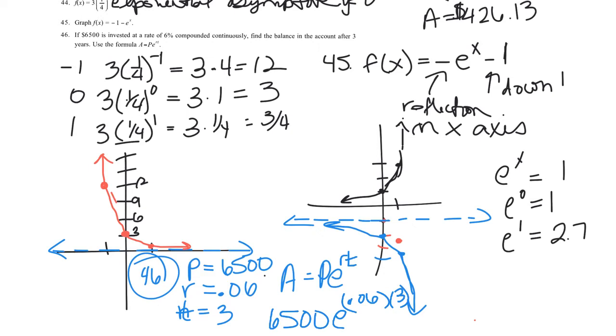So this is 6,500 times E to the 0.06 times 3. And in the calculator I'm going to do second LN. The E button is above the LN key. It'll say E to the X. So 0.06 times 3, and that's 6,500 times about 1.197. Again, I'm not going to round in my calculator. Times it by 6,500, $7,781.91. I missed that 1 in there. So $7,781.91 is the final answer on that.